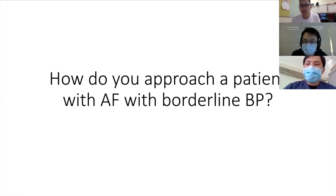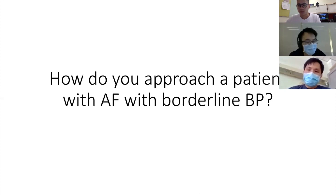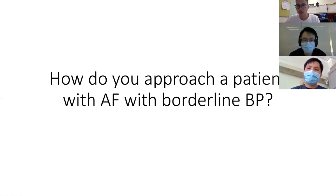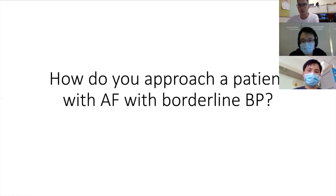When the patient's BP is borderline — not low enough to consider shock, but still in the low hundreds or nineties — giving metoprolol can be worrying. In this situation, I'd give digoxin, which doesn't have much effect on blood pressure. If the rate is very fast and BP is borderline, IV digoxin 125 or 250 mcg can be given — just be careful in patients with renal impairment, though usually a single dose is fine.